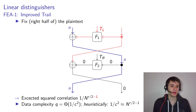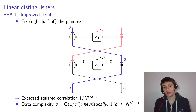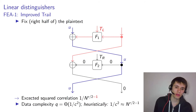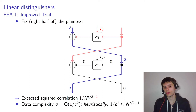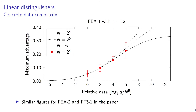The data complexity is well known for linear cryptanalysis: it should be 1 over the squared correlation of the approximation being used. But we cannot apply this directly here because the correlation isn't known — we only know the average squared correlation. As a heuristic, we might plug in the average, giving us N to the power of R/2 minus 1 as the data complexity.